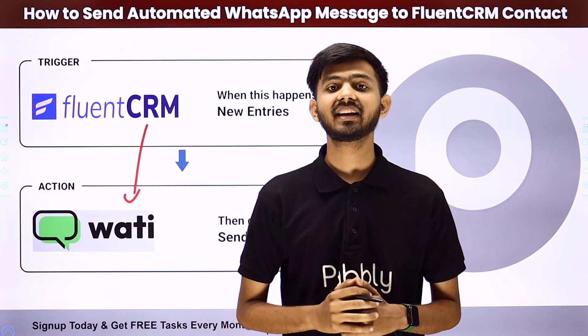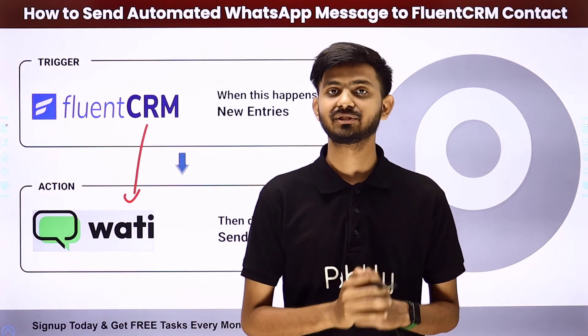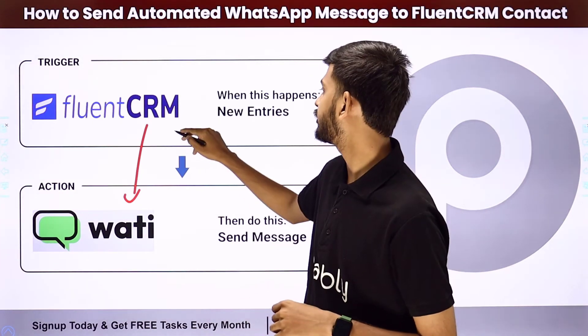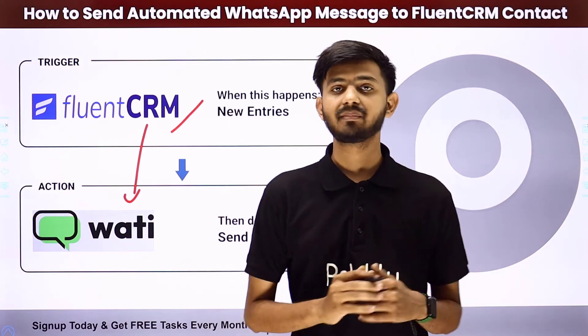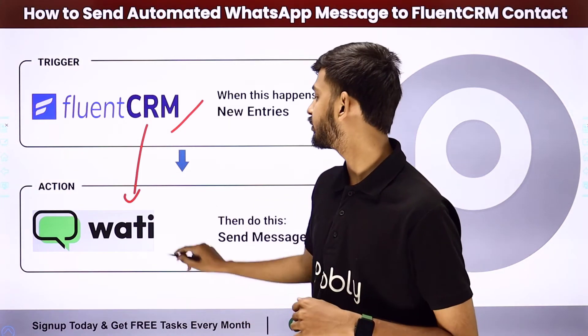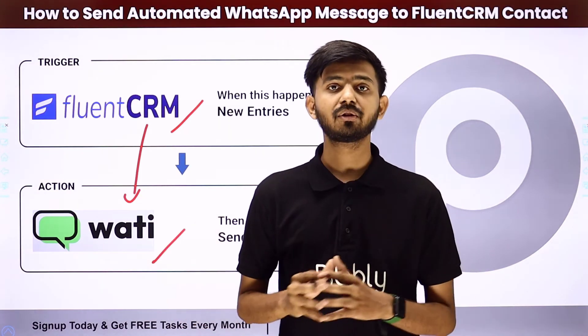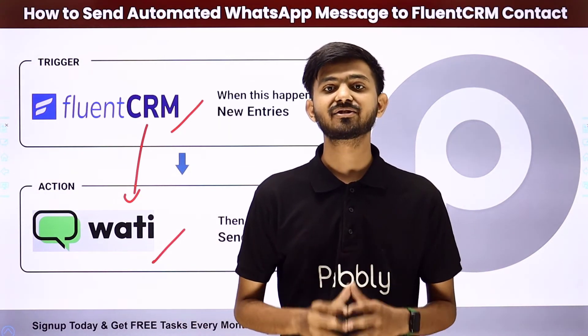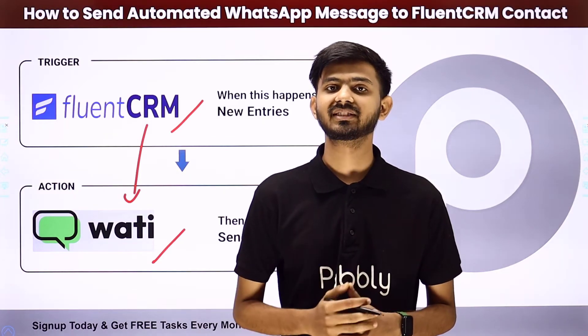In PabblyConnect, we are going to use Trigger and Action. In the Trigger application, I am going to use FluentCRM. In the Action application, I am going to use Vati. So how am I going to create this integration? Let me take you to my computer screen.